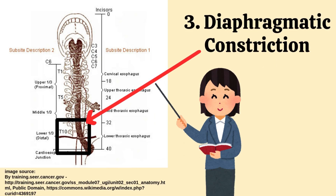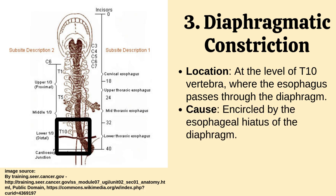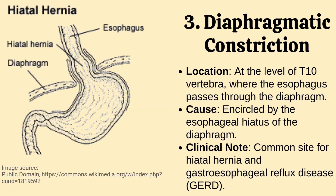Number 3: Diaphragmatic constriction of the esophagus. It is located at the level of T10 vertebra, where the esophagus passes through the diaphragm. It is encircled by the esophageal hiatus of the diaphragm. Clinical note: it is a common site for hiatal hernia and gastroesophageal reflux disease.